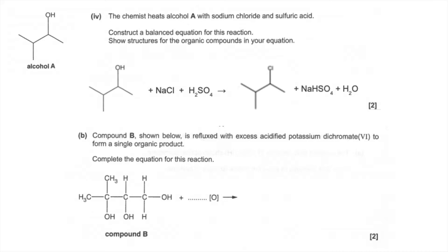So it's got multiple alcohol groups. It's refluxed with excess acidified potassium dichromate(VI) to form a single organic product, and we've got to come up with the equation. So the alcohol groups, first thing we've got to do is establish what's going to happen to them when they're exposed to this oxidizing agent, and we've also got to factor in that it's reflux.